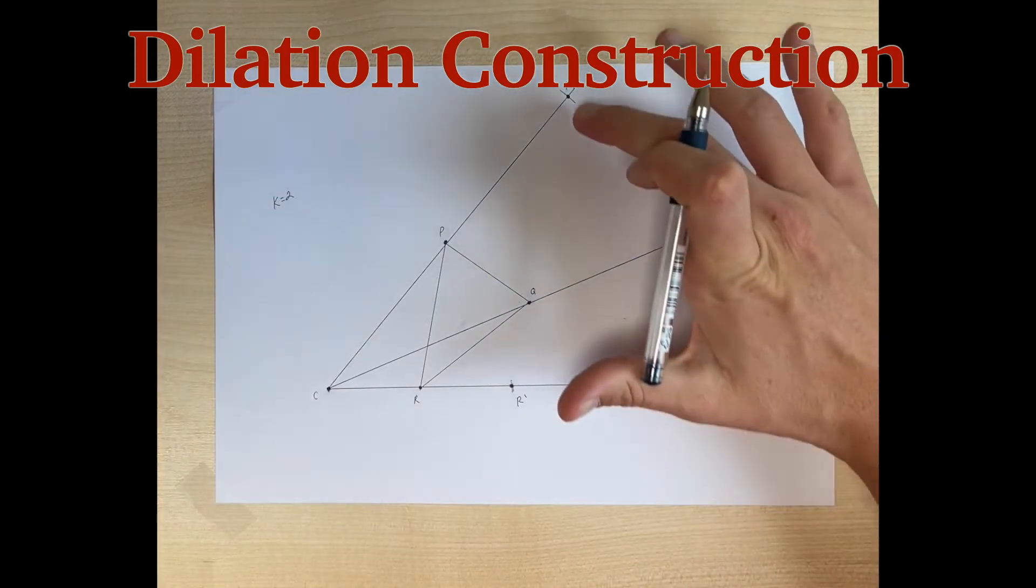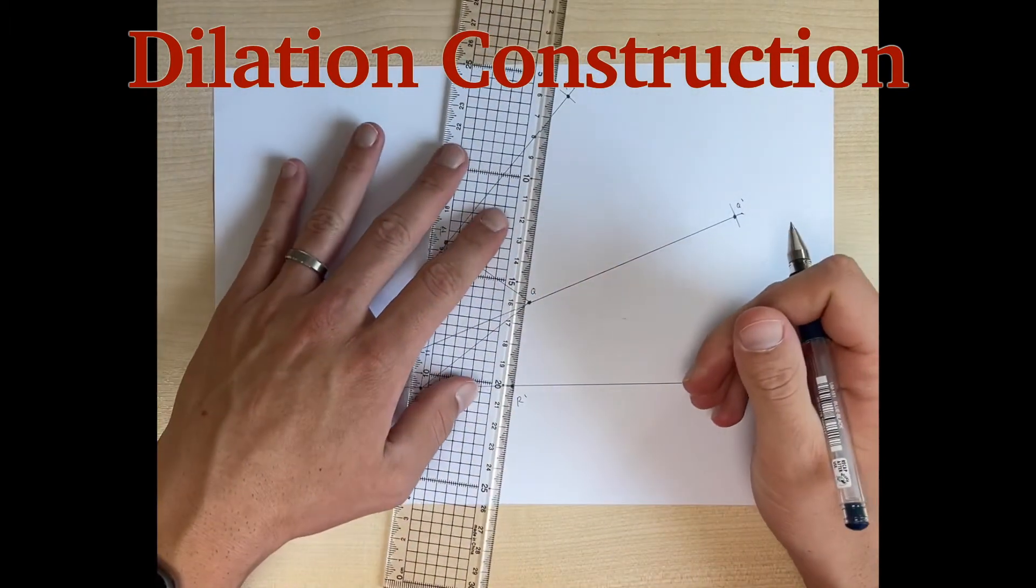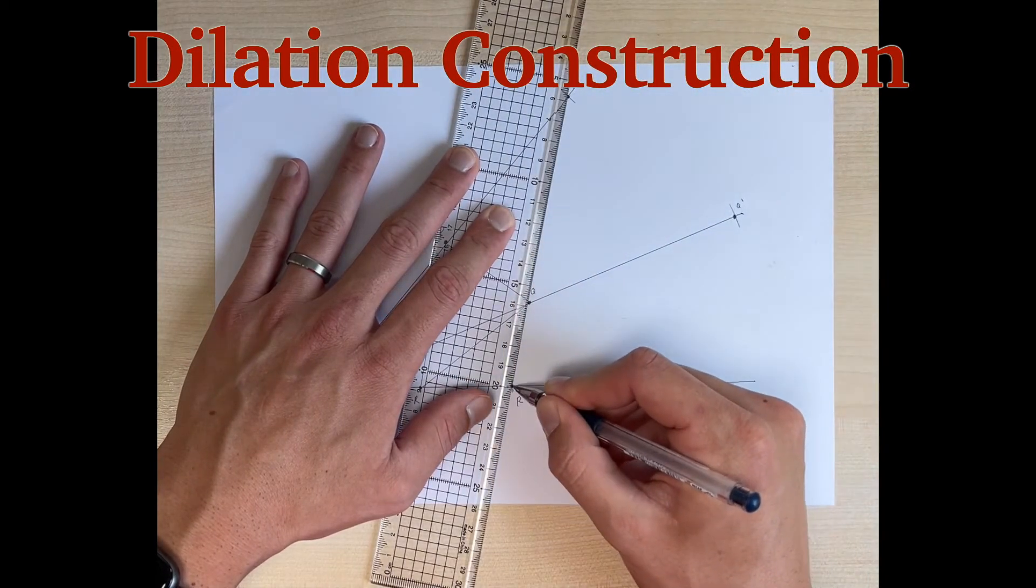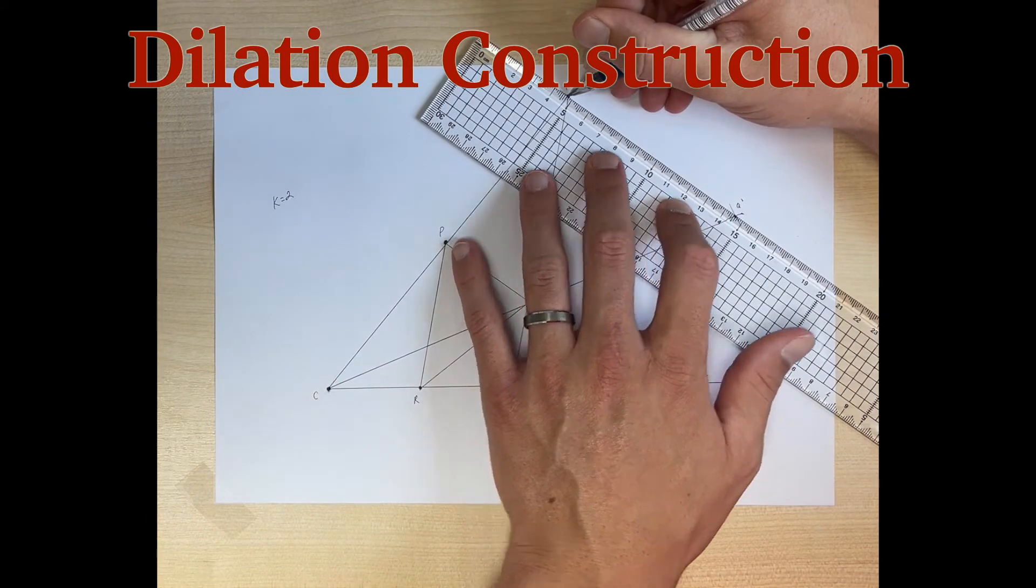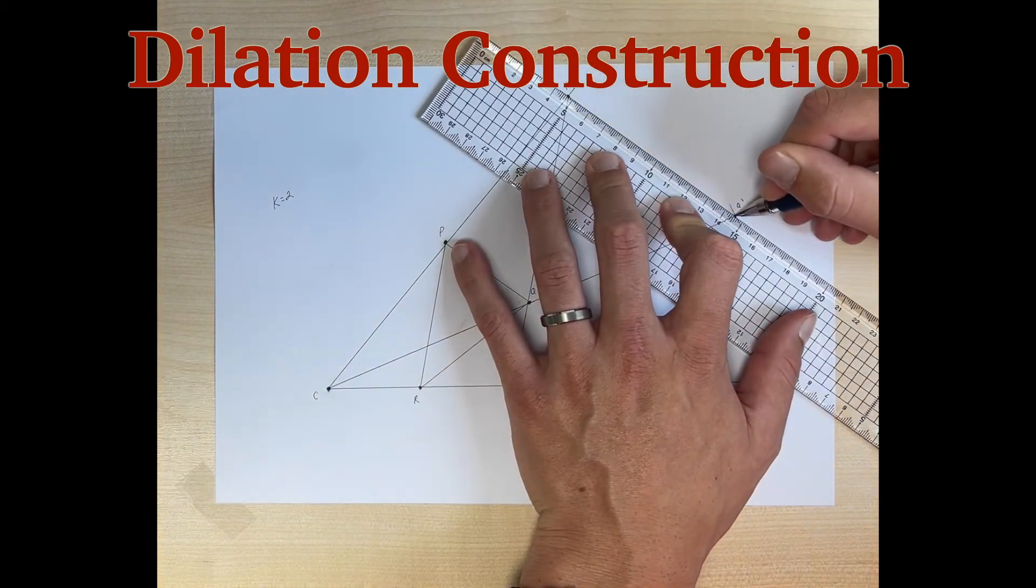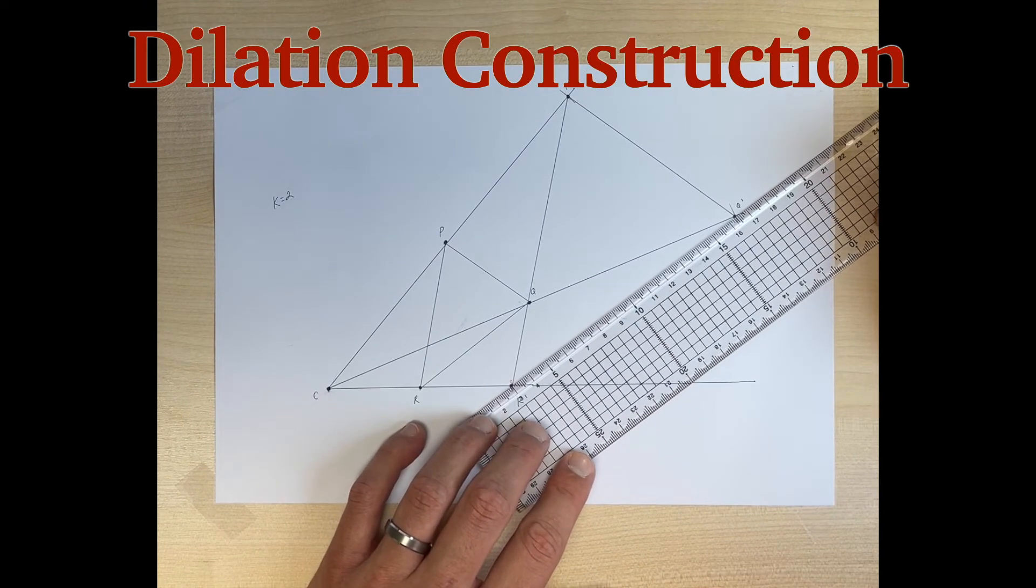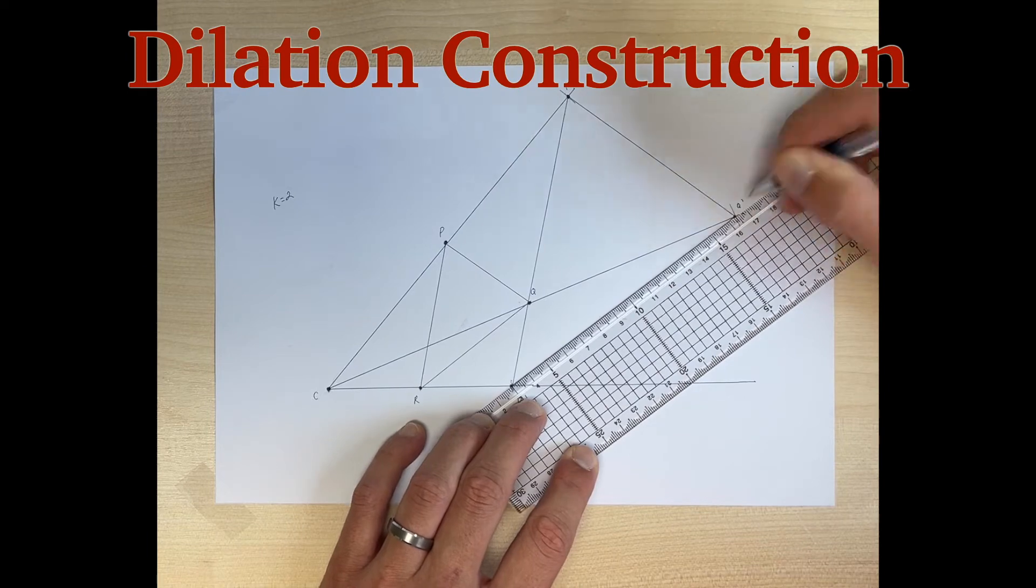Now we can connect the vertices of P prime, Q prime, and R prime to make our new triangle that has been dilated by a scale factor of 2. Connect P prime and Q prime, and the last one we will connect is R prime to Q prime.